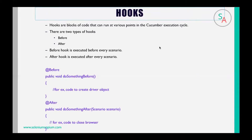The before hook is executed before every scenario, and the after hook is executed after every scenario. In the example below, there is a method 'public void doSomethingBefore' annotated with @Before. We also have another method 'public void doSomethingAfter' annotated with @After. The hooks start with the @ symbol, which is called an annotation. @Before and @After are the annotations, also called hooks in Cucumber.